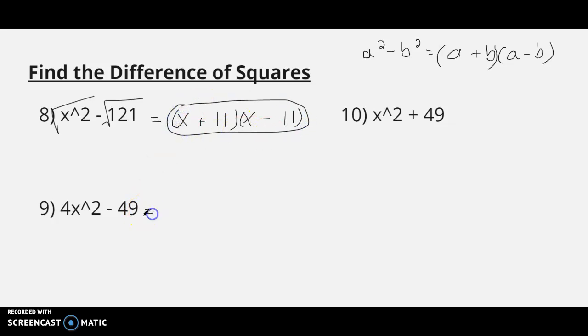Look at number 9. Take the square root, square root of each thing. The square root of 4x squared is 2x, I should say. Square root of 49 is 7. So our factored form is going to be 2x and 7. One will be a minus, one will be a plus. Again, order doesn't matter as long as it's set up like that. And there we go.